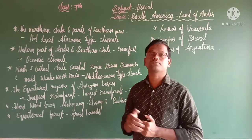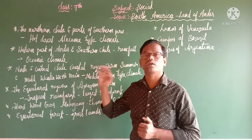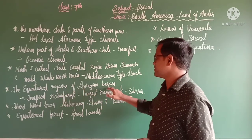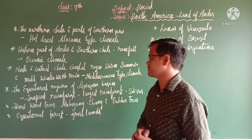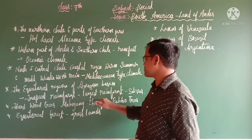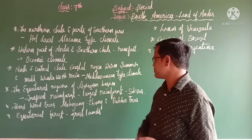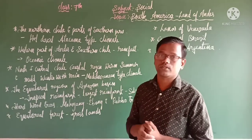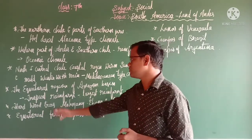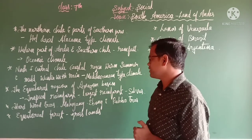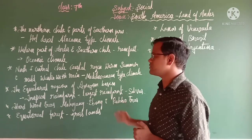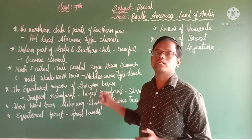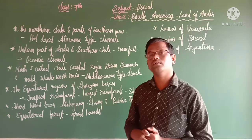The Atacama desert is the driest area on Earth, with no rainfall recorded for the last 200 years. The equatorial region of the Amazon basin has dense tropical rainforest — the world's largest rainforest, called selvas. Here we can see different types of trees: evergreen trees and hardwood trees like mahogany, ebony, and rubber trees. Rubber trees are used to make latex.